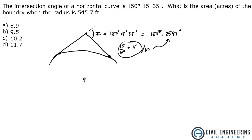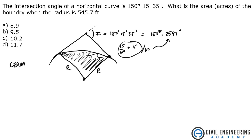Now that we have that, let's look at the rest of this curve. We're given the radius of the curve. I'm drawing a horizontal curve here. You can find a similar diagram in the civil engineering reference manual in the transportation horizontal curves chapter. In order to solve this, we need to interpret what it's asking for — the acres of this area. It's talking about this arch, this circular segment, and that's the key here.